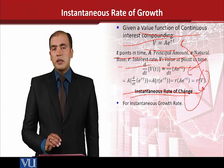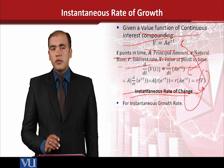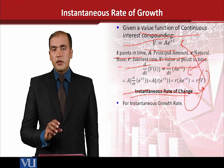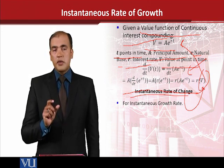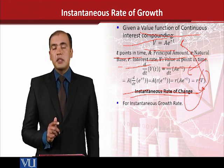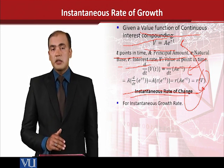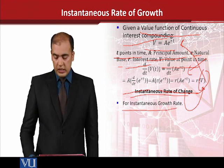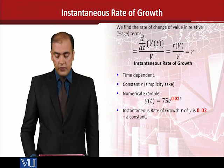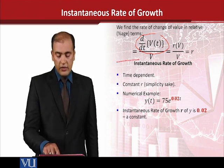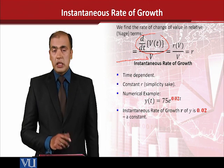Just like the rate of change, we are in search of the instantaneous rate of growth. For that, we need to set a standard against which we will calculate the rate of growth. This rate of change we keep in the numerator and compare it to the original value. That gives us the percentage change, which in this case is known as the growth rate. For the instantaneous growth rate, we shall follow this formula, where the instantaneous rate of change is in the numerator, whereas the original function is in the denominator.